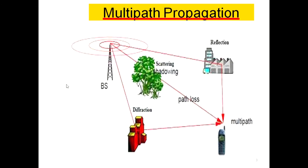This picture represents multipath propagation. The signal transmitted by the base station is transmitted through free space, represented by a spherical coordinate system.